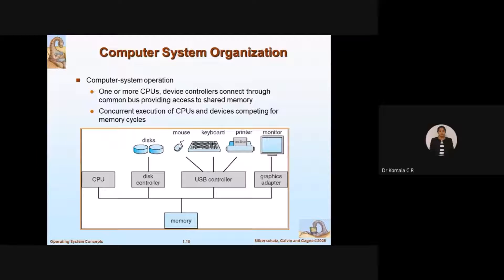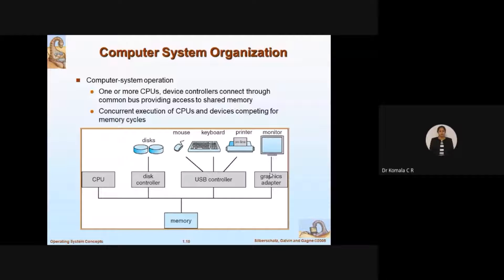We also have mouse, keyboard, and other input devices, and a printer as an output device. Obviously, you are going to connect all these devices to your system. So you have a controller called USB controller, which is a bus controller. This allows communication between the input-output devices and the memory. Next, we have a monitor as another output device. Data transfer between the monitor and system memory is handled by an intermediary controller called a graphics adapter. So all these are the best examples here.